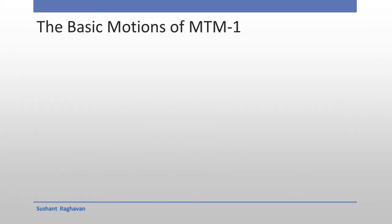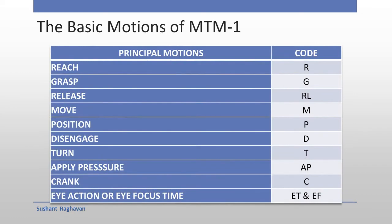The basic motions of MTM — Principal motions and their codes: Reach (R), Grasp (G), Release (RL), Move (M), Position (P), Disengage (D), Turn (T), Apply Pressure (AP), Crank (C), Eye Travel and Eye Focus (ET and EF).